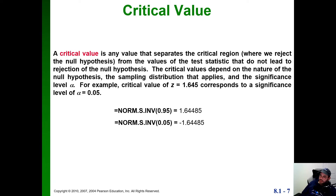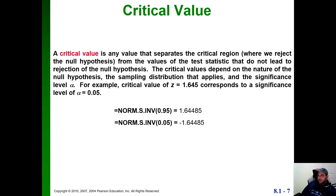The critical value is any value that separates the critical region — where we reject the null hypothesis — from the values of the test statistic that do not lead to rejection of the null hypothesis. We calculate those using Excel with the standard normal distribution inverse function: 0.95 for the right tail and 0.05 for the left tail. Those are the Z values that cut those regions. Then we calculate the test statistic and check where it falls in the next couple of steps.